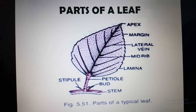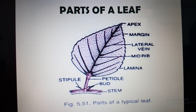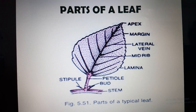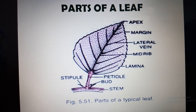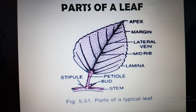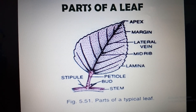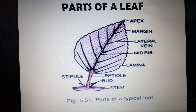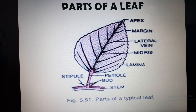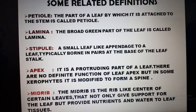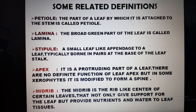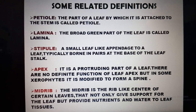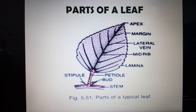The different parts of the leaf are: apex, margin, lateral vein, mid rib, lamina, petiole, and stipule. We will discuss each part individually. The first one is the petiole.